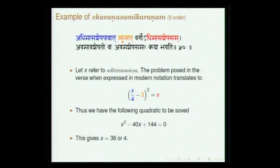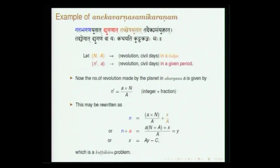For anekavarna (many unknowns): there is a second-order ekavarna example involving adhikamasa shesha padat (one fourth of the adhikamasa remainder), triunat (minus 3), vargaha (squared), adhikamasa shesha samam — this is a quadratic form for which the solution is x = 36, determined from other astronomical considerations.